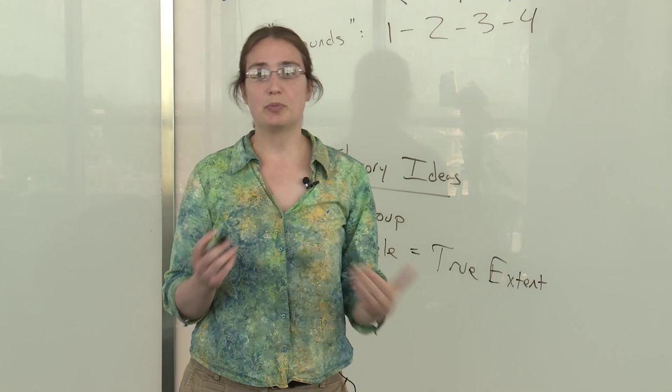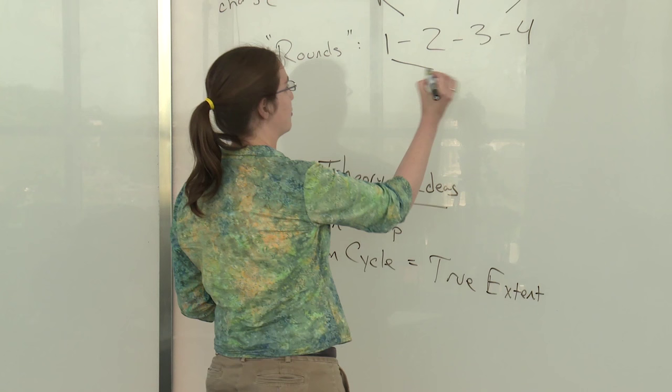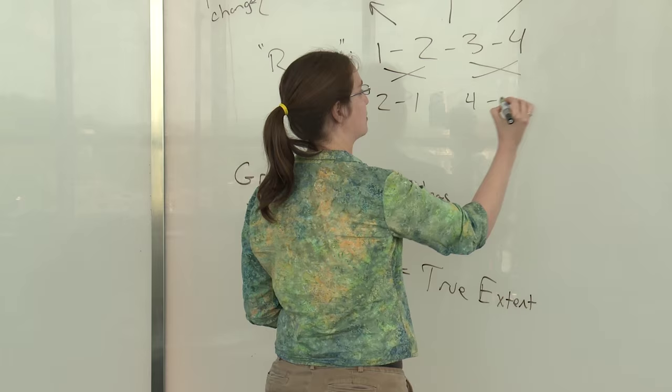So for four bells, there's only one way we can do this. We can swap the first two bells with each other, and at the same time we swap the last two bells with one another. And so we end up with the order two one four three. This is called a cross change.